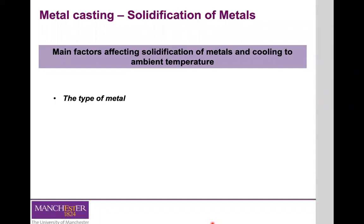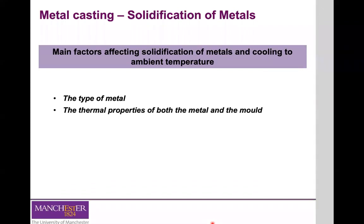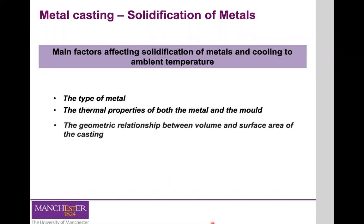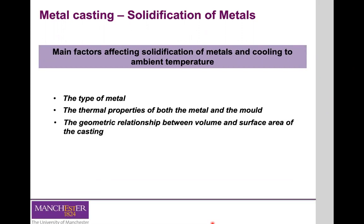One factor is the type of metal — depending on whether you're using a pure metal or an alloy, the solidification process will occur under different conditions. Also important are the thermal properties of the metal and the mold, which influence the rate at which you dissipate heat and solidify. The geometrical relationship between the volume and the surface area of the casting matters too — the higher the surface area for heat exchange, the faster the solidification rate, and therefore the grain structure will also be influenced. Finally, the shape of the mold is another factor.